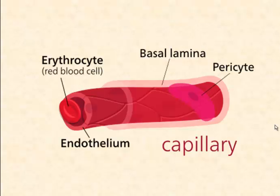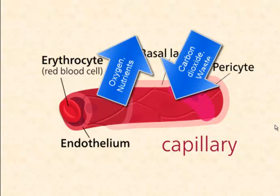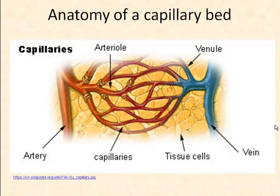Capillaries are microscopic passages hollowed out in tissue. Their walls are composed of one layer of endothelial tissue. They branch to form a dense network throughout our bodies. Capillaries are the location of exchange of materials between blood and tissues. They are where gas and nutrient exchange takes place via diffusion.